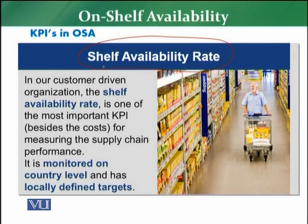The shelf availability rate is monitored at store level, article level, SQ level, category level, department level, and country level — with specific targets associated to each. Every retail store has a shelf availability rate target, ideally close to 100%. If a store is at 87% or 88%, the target is to improve the shelf availability rate quickly and immediately.